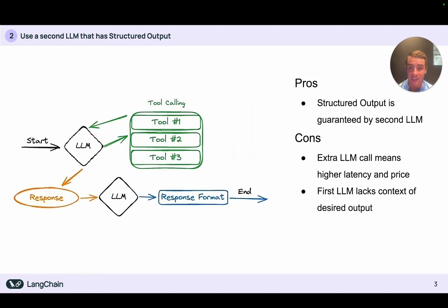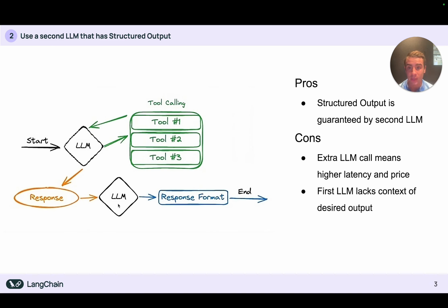In addition, the first LLM actually lacks the context of the response format. For example, if we ask it 'what's the weather?' and the response format requires wind speed, the first LLM might not know that. So it only looks up temperature or precipitation, thinks it's solved the question, and routes to the second LLM. Now that second LLM is trying to format the response with wind speed but can't find it. So that's one of the cons of this format. Now that we've run through a quick overview of both formats, let's dive into some code.